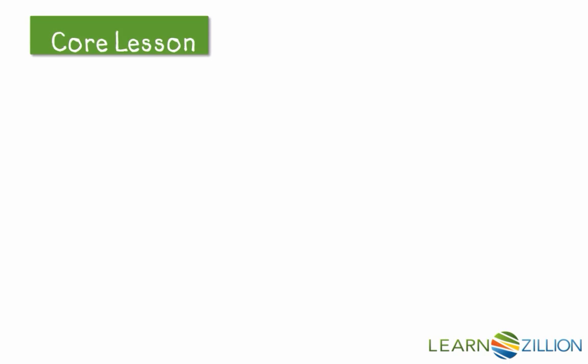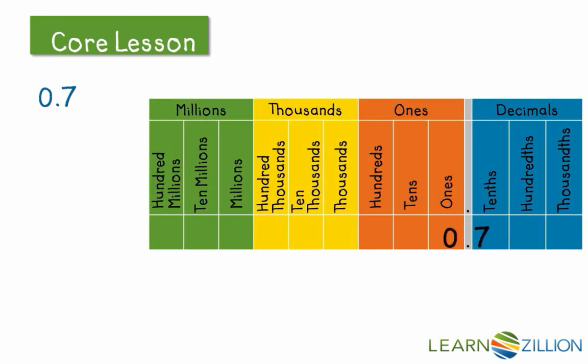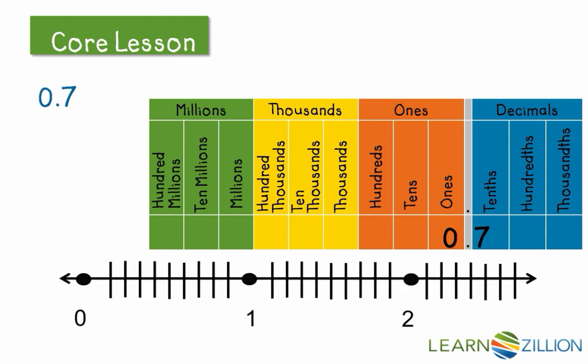Let's take a look at that first decimal we were introduced to, 7 tenths, or 0.7. Let's plot this value on a place value chart to see what those digits represent. We have 0 ones, our decimal point, and then 7 tenths. If we were to place this value on a number line, you would see that 7 out of the 10 parts would be shaded in.